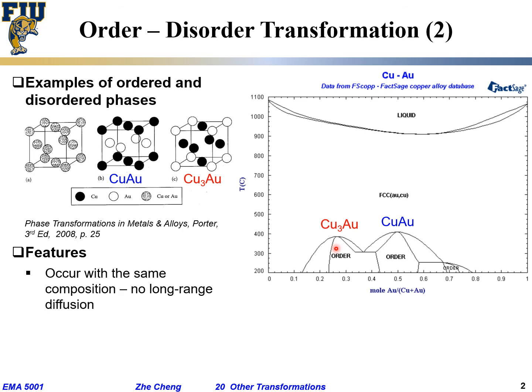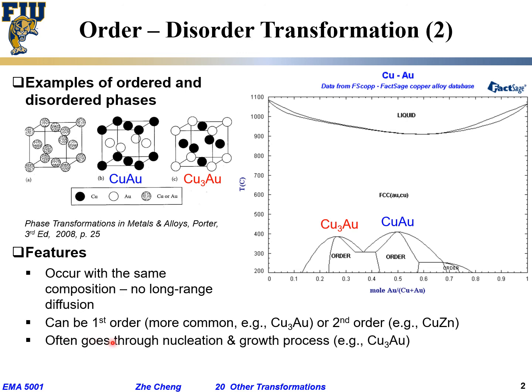They occur with the same composition - no long-range diffusion. Going from disordered to ordered, I don't need long-range diffusion. It can be second-order or first-order, but first-order is more common. It can also go through nucleation and growth cycles. The rate of transformation depends on many factors which are complicated.